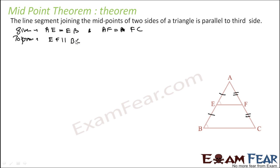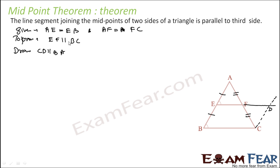To prove this, we draw a construction: extend EF to point D, and draw CD parallel to BA. So in the construction, CD is parallel to BE.